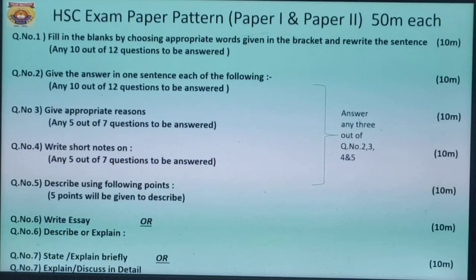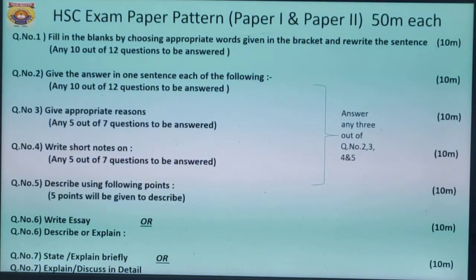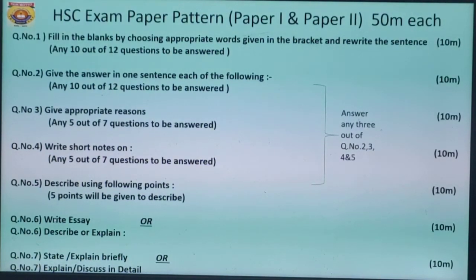One more thing students: as we have discussed earlier, from question numbers 2, 3, 4, and 5, you have to answer any three questions. These are four questions in which you have to answer any three. So what will be the mark distribution? Question number 1 is 10 marks. Question numbers 2, 3, 4, and 5, any 3, so 10, 20, 30, 40. And between question number 6 and 7, you have to solve only one, either question number 6 option A or option B, or question number 7 option A or B. This is 10 marks, so total it is 50 marks each.